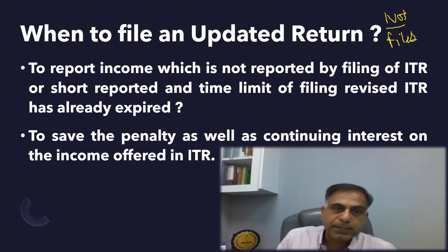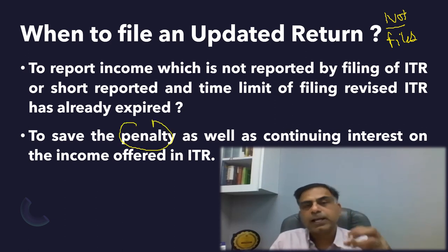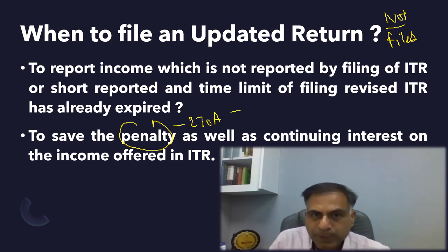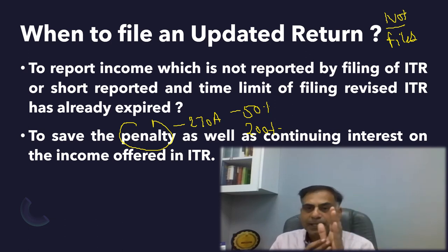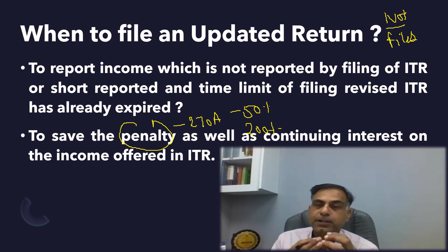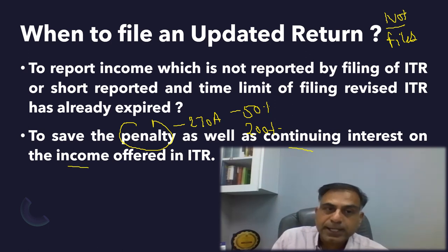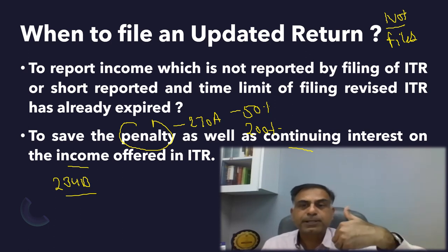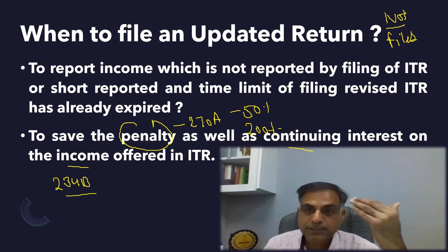The main benefit of filing an updated ITR is that it will help you save penalties. The penalty under Section 270A of the Income Tax Act 1961 may range between 50% to 200%. For underreporting, 50% of the tax amount is levied as penalty, and for misreporting, 200% of the tax amount is leviable as penalty. Further, the continuing interest under Section 234B will also stop once you file an updated return. If you don't file and are later assessed, you will be subject to interest under Section 234B until the assessment is completed.